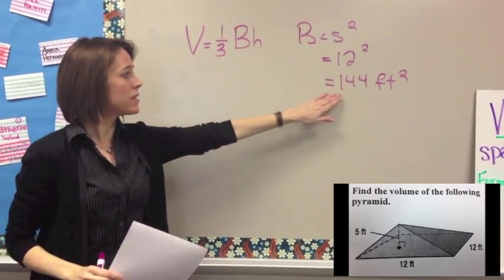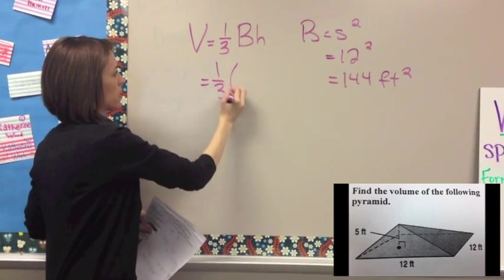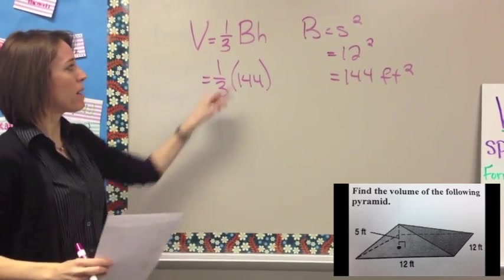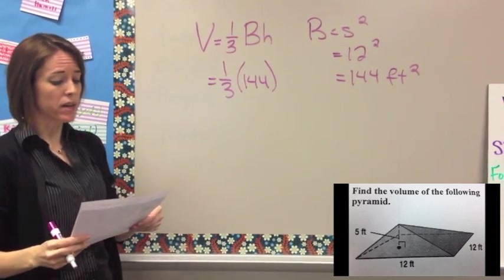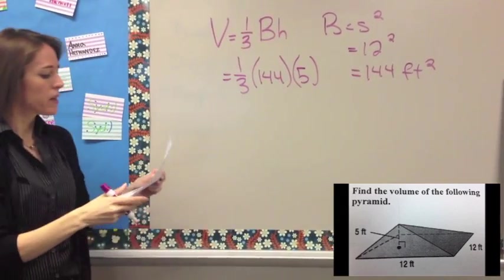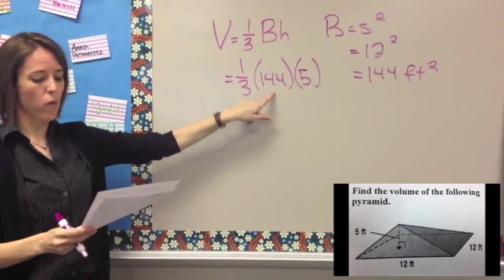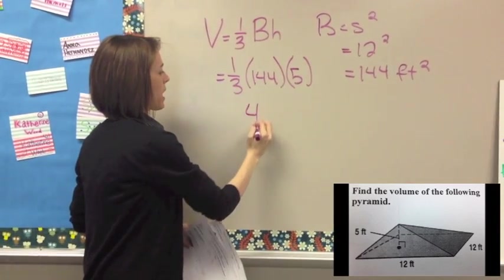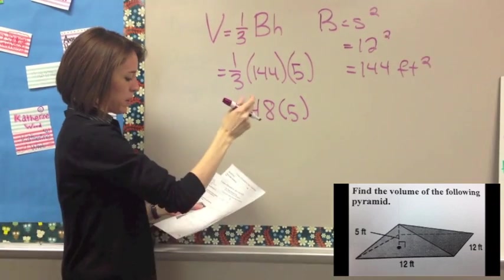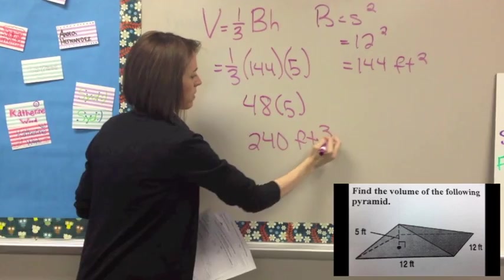Now take that and plug it into the formula: (1/3) times the area of the base, which is 144, times the height of the pyramid, which is 5. So 1/3 times 144 gives us 48, and then 48 multiplied by 5 is 240 feet cubed.